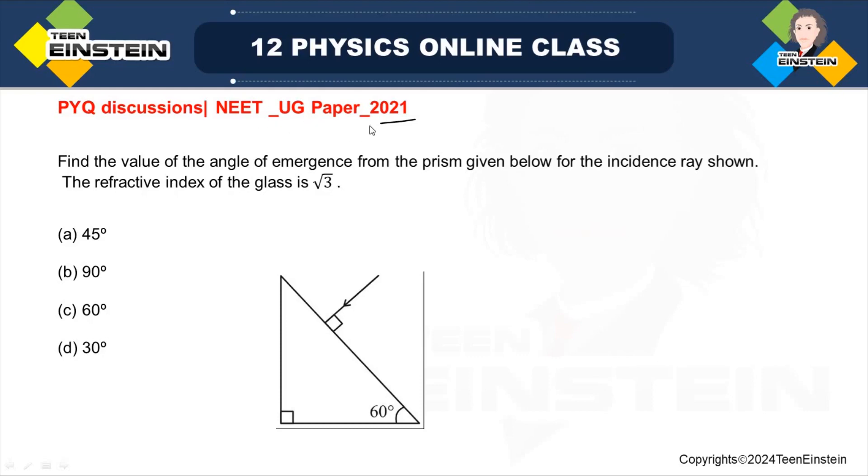Hello students, welcome to the PYOQ discussions on NEAT UG papers. Here, I have got a problem from NEAT UG paper 2021. The question says, find the value of the angle of emergence from the prism given below for the incidence ray shown. The refractive index of the glass is square root of 3.